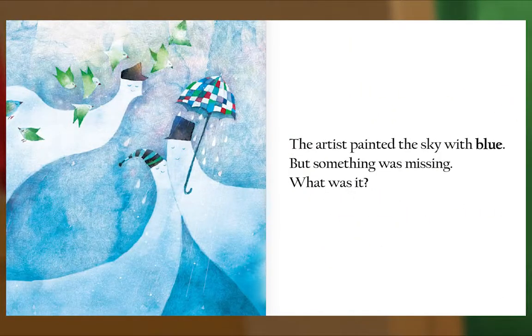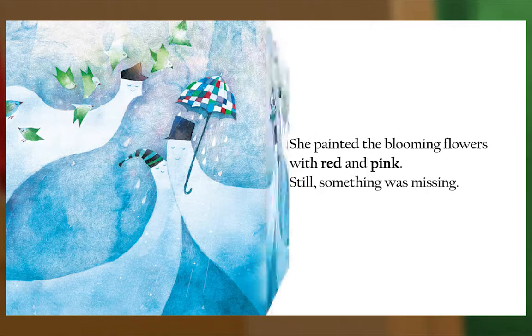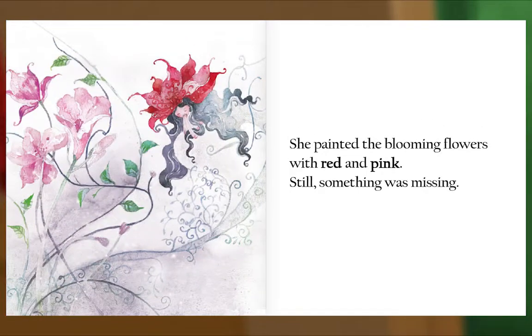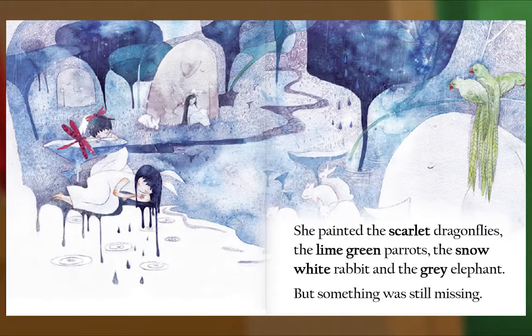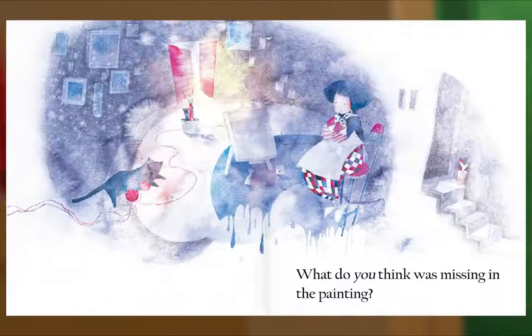The artist painted the sky with blue, but something was missing. She painted the blooming flowers with red and pink — still, something was missing. She painted the scarlet dragonflies, the lime green parrots, the snow white rabbit and the gray elephant, but something was still missing. What do you think was missing in the painting?